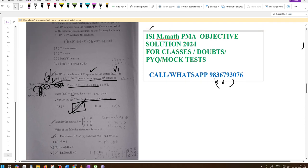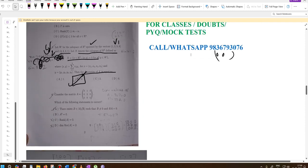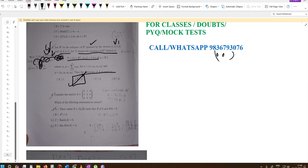Today we are solving the ISI M Math objective 2024, question number 4. A matrix is given and we need to find which of the following statements is correct.